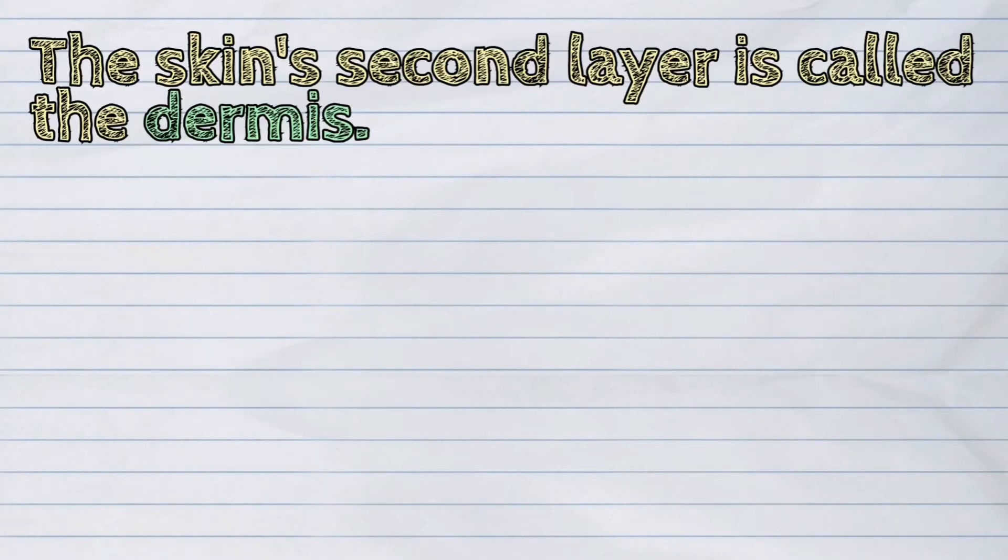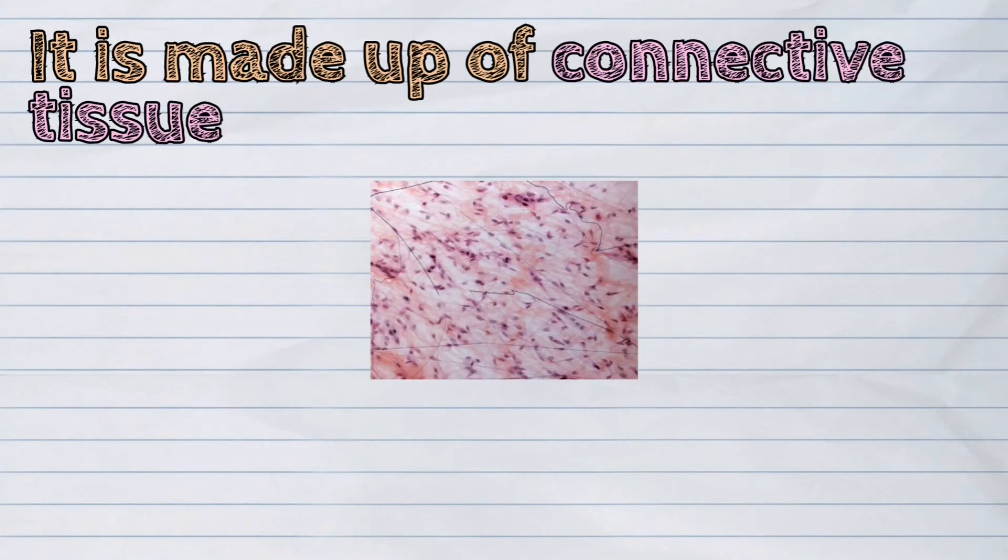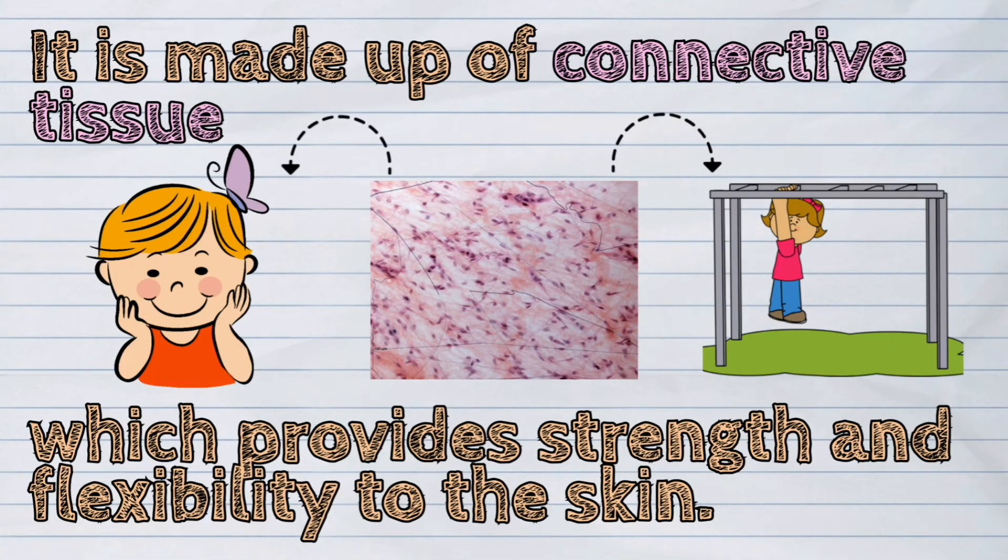Now, let's learn about the skin's second layer, the dermis. It is the thickest layer of the skin. It is made up of connective tissue which provides strength and flexibility to the skin.